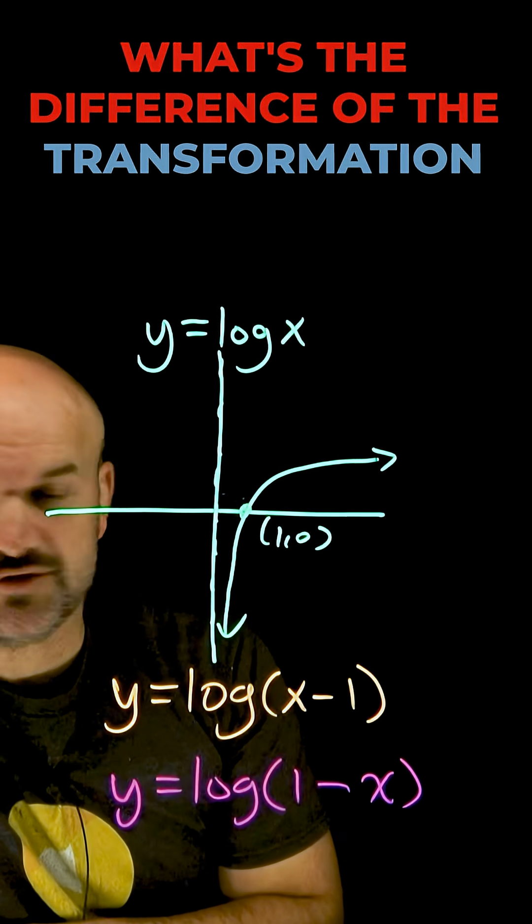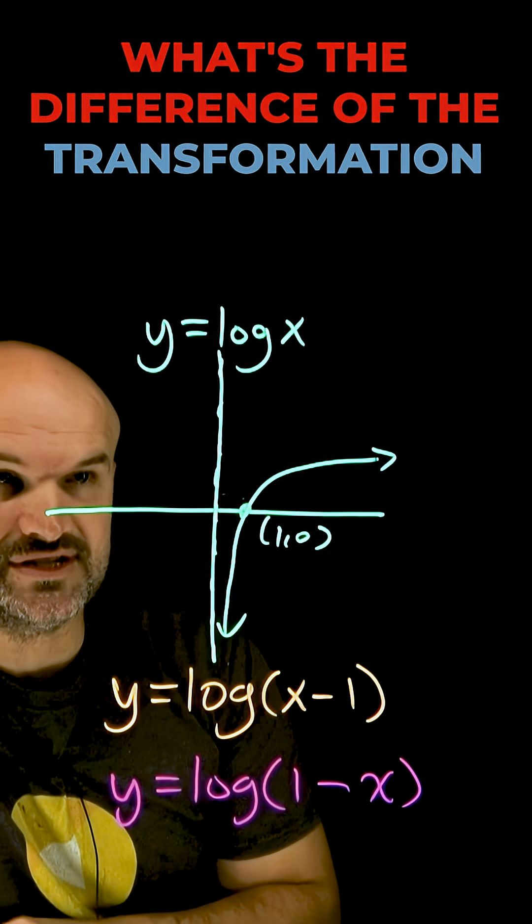What's the difference when graphing a logarithm of x minus 1 and 1 minus x? Now to understand that we need to know a couple things.